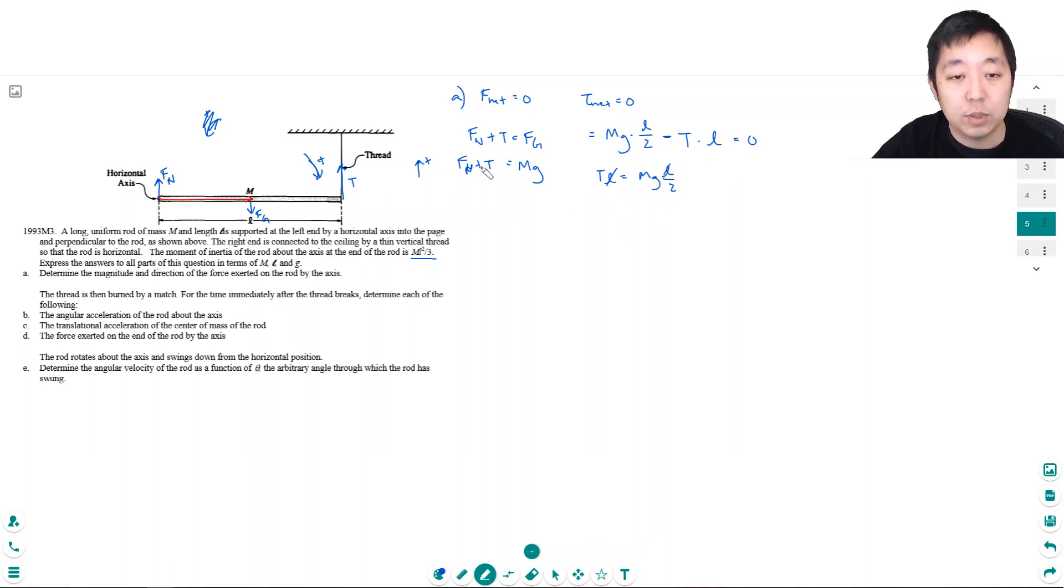So now that I know T, I can plug that back into here. Fn plus one half mg is equal to mg, so the normal force has to equal positive one half mg, because one half mg plus one half mg will give me mg. The direction is also upward, because I got a positive value. See, if I had guessed downward, I would have gotten a negative value.